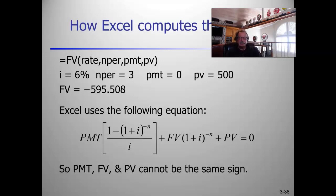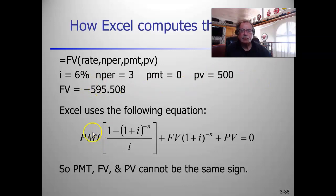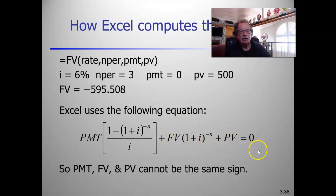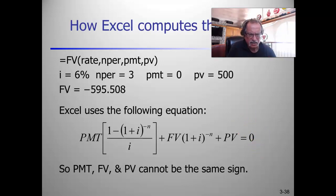The reason the signs flip is because of how Excel computes the numbers. If we assume payment is zero, that term drops out, and future value and present value end up on the same side of the equal sign. They have to have different signs for the formula to equal zero. This is an Excel nuance — not necessarily classical financial engineering — but it's why the sign gets flipped.